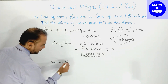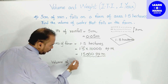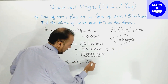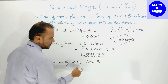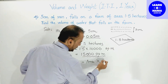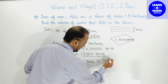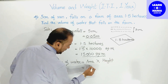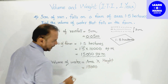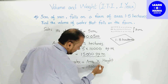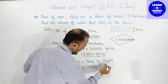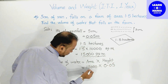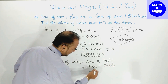Volume of water = area × height of rainfall = 15,000 square meters × 0.05 meters = 750 cubic meters। यह है total volume of water जो farm पर गिरा।